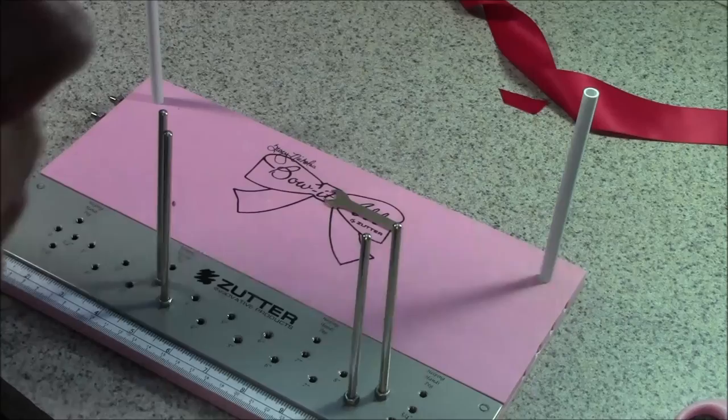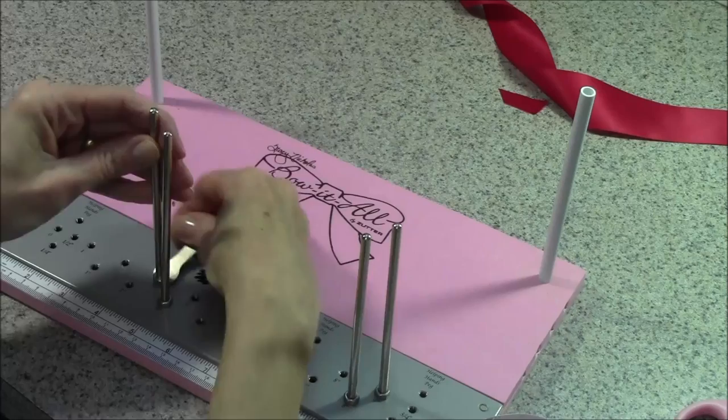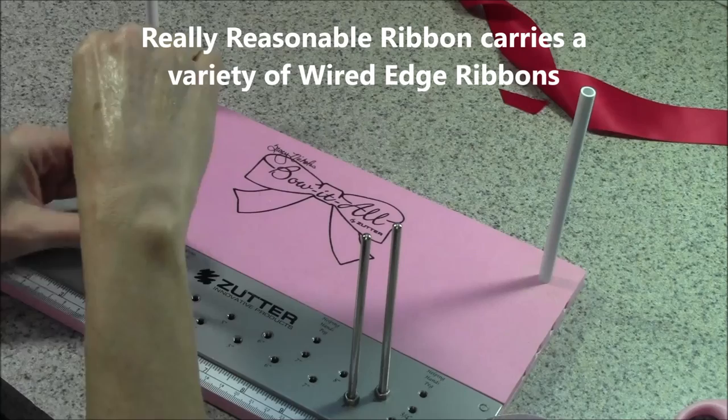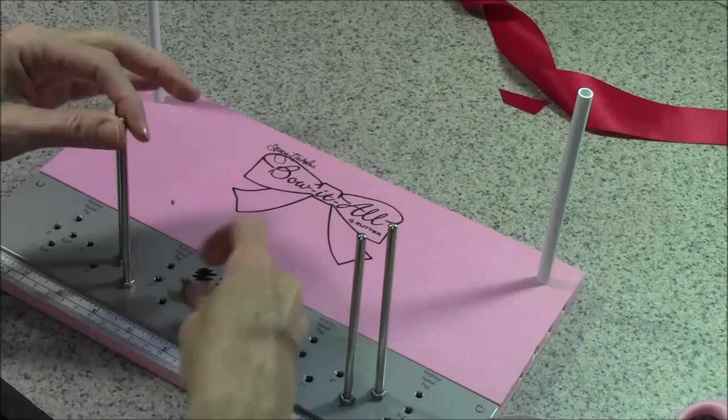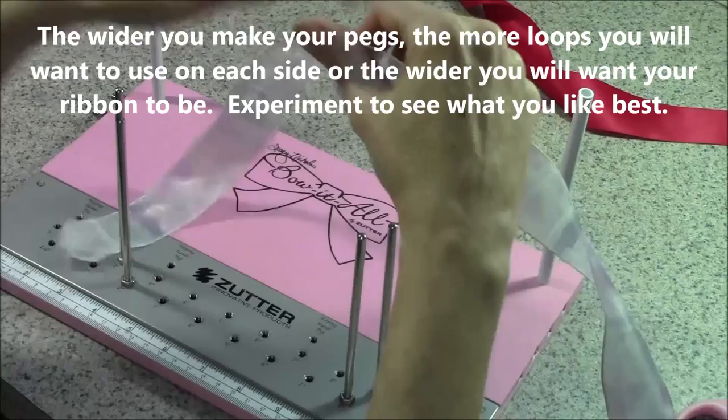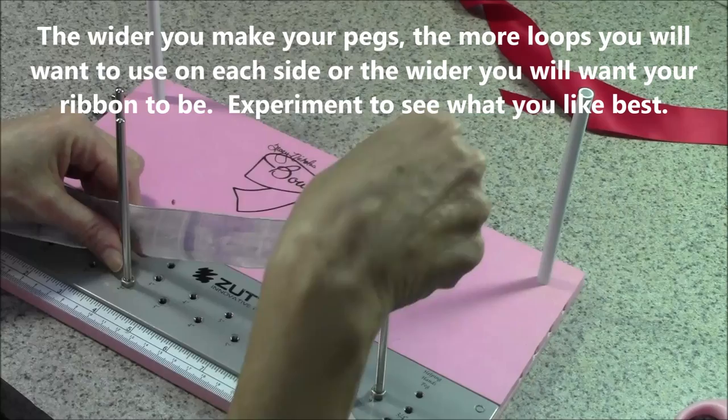So the easiest possible bow that you can do for a big wide and loopy bow - the best ribbon you can use is a sheer wired edge ribbon. I'm going to make the pegs just a little wider for this one. Now I'm on the two and the nine for the back and the two and the eight for the front loops. I have this inch and a half wide sheer ribbon and we are going to just do a layered bow.